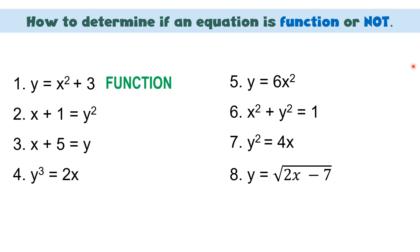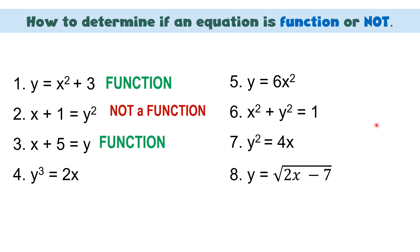For the second equation, y is raised to the power of 2, which is even, so this is not a function. Number 3: y has no written exponent, meaning the exponent is 1 — therefore, that is a function. Number 4: y³ = 2x — cube is an odd number, so this is a function. Number 5: y = 6x² — y has no exponent written, so the exponent is 1, which is odd, therefore this is also a function.